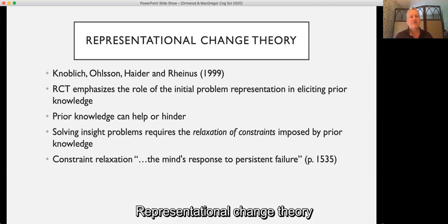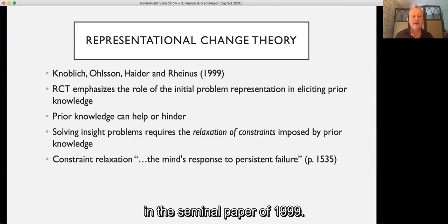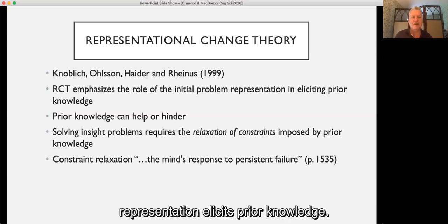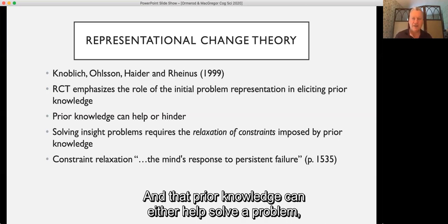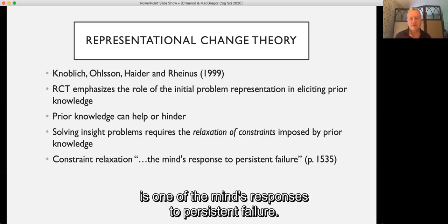Representational Change Theory was introduced by Knoblich, Ohlsson, Haider, and Rhenius in their seminal paper of 1999. RCT emphasizes how the initial problem representation elicits prior knowledge, and that prior knowledge can either help solve a problem or hinder the solution. They argue that solving insight problems requires the relaxation of constraints imposed by prior knowledge, and that constraint relaxation is one of the mind's responses to persistent failure.